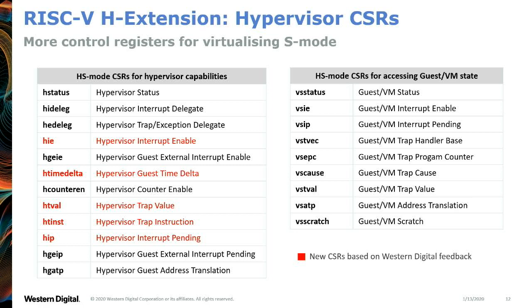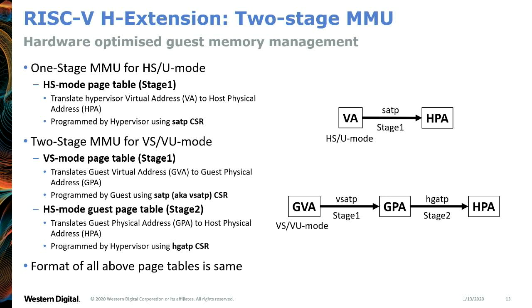The red ones highlighted here are the CSRs added based on feedback from Western Digital and our efforts in co-developing the spec. Just like most modern architectures like ARM64 and x86-64, we also have a two-stage MMU for the guest and VM, while the hypervisor just needs a single stage for itself. We have an HS mode page table for hypervisor virtual address to host physical address translation. When running in VM or guest mode, two page tables are active: the VS mode page table programmed by the VM for guest virtual to guest physical address translation, and the HS mode guest page table programmed by the hypervisor for guest physical to host physical translation.